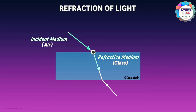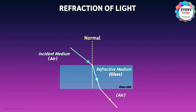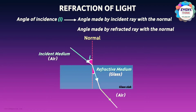Similarly, light can also travel from one medium to another — for example, from glass to air. The angle made by the incident ray with the normal is called the angle of incidence, denoted by i. The angle made by the refracted ray with the normal is called the angle of refraction, denoted by r.